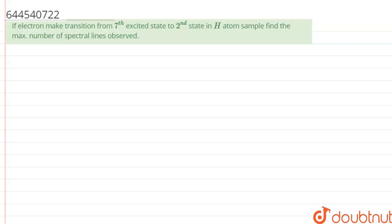Hello everyone, in this question we have been given, if electron makes a transition from 7th excited state to 2nd excited state in each atom, sample finds the max number of spectral lines absorbed.